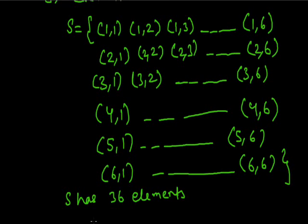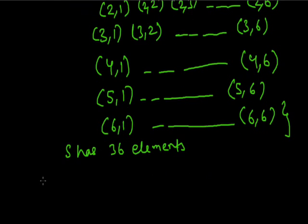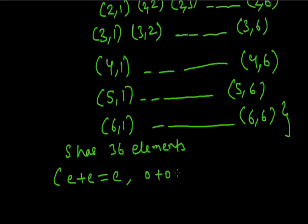In the first question, we have to find the probability of getting an even number as the sum. An even number can be obtained only when both numbers are odd or both numbers are even. If we add even plus even or odd plus odd, we get an even number. But if we add odd plus even, we cannot get an even number.